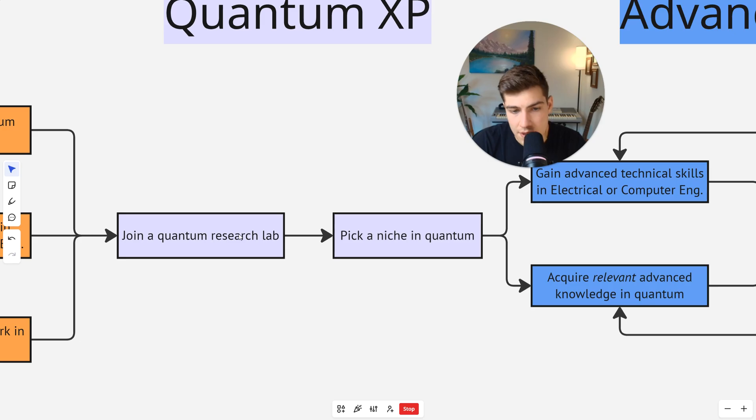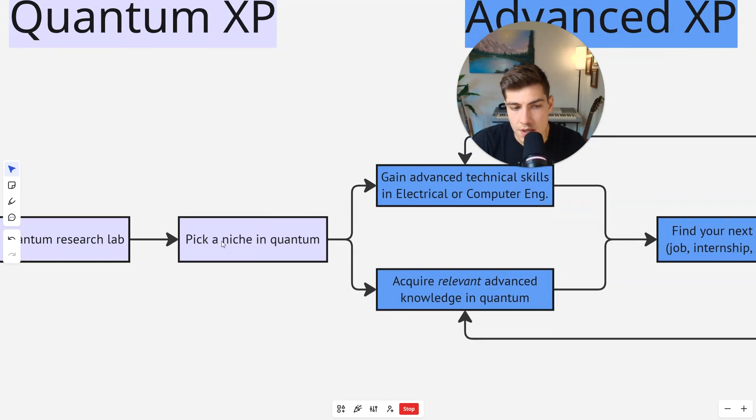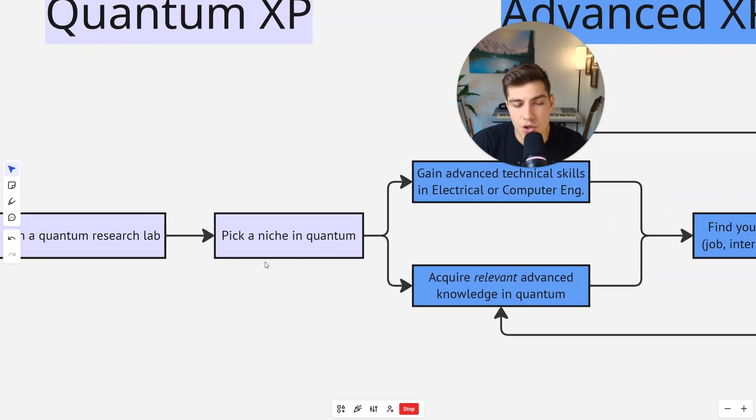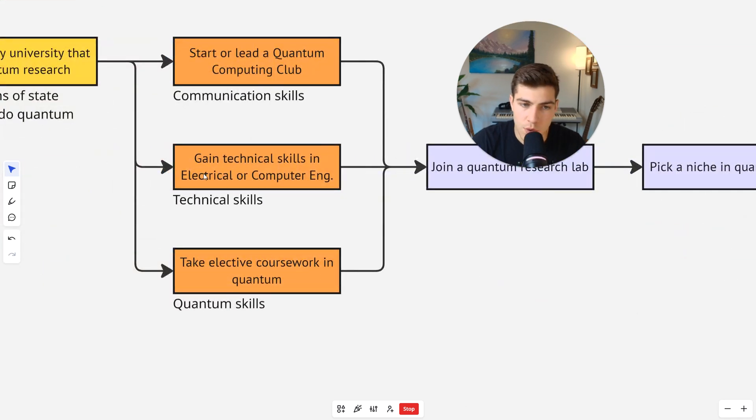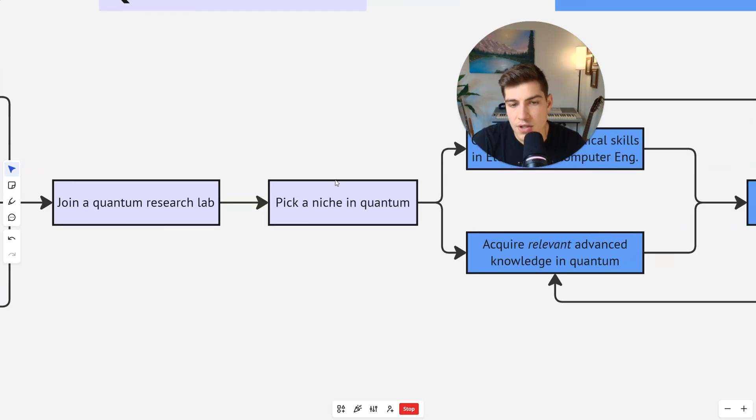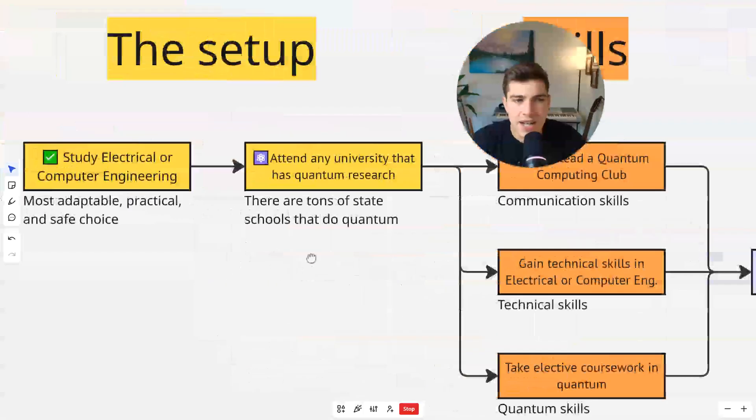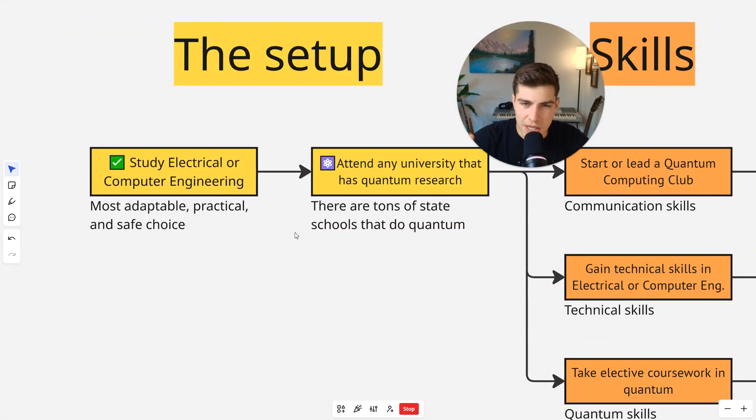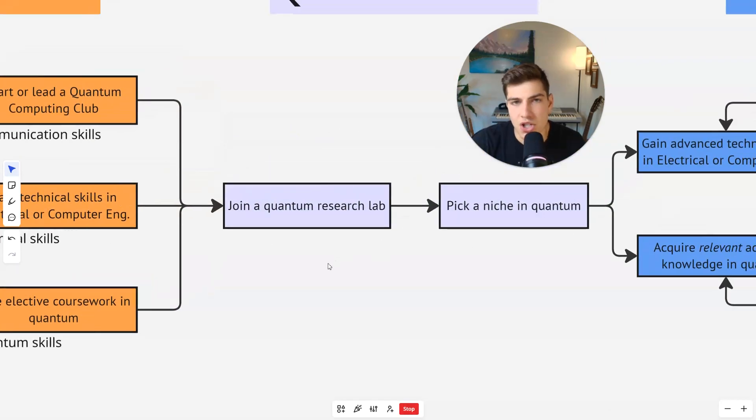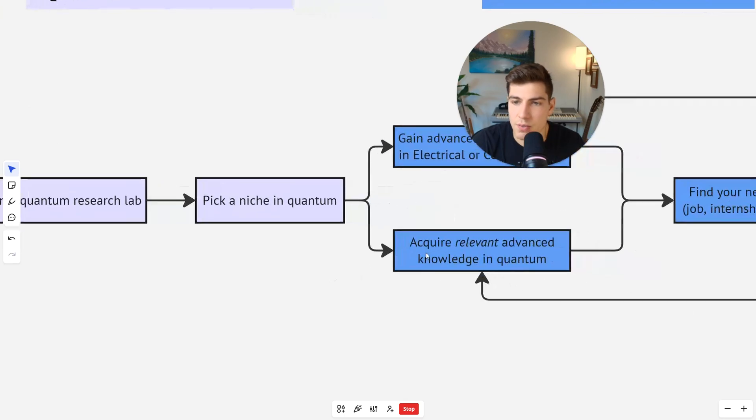Then once you have some experience in quantum, you're going to try to pick a niche in quantum. And what this basically means is you are understanding how you can apply your technical skills in electrical and computer engineering to quantum computing. And so that's when you pick your niche. And the only way that you're going to ever understand that is if you have some sort of experience working in a quantum research lab and you actually understand what it's like to work in quantum computing, what quantum computing really is. You can have an idea of what you want to do during your setup, like when you're just picking schools and whatever, but you don't actually understand what it's like to work in the lab and what challenges exist in quantum computing until you have that experience in the first place.